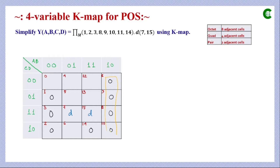We check for a quad. Four adjacent zero cells form a quad. We first check whether groups can be formed using zeros alone before involving don't care terms. Evaluating this quad: A and B do not change; A is 1 so it becomes A', B is 0 so it stays B. C changes (eliminated), D changes (eliminated). The simplified term for this quad is A' + B.